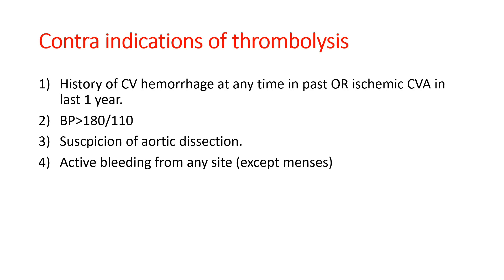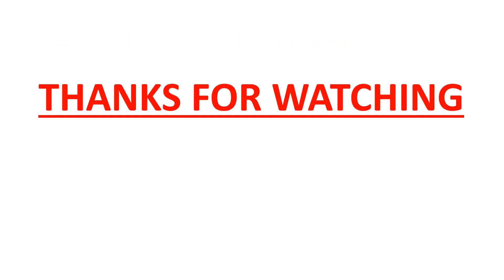Now, the contraindications to thrombolysis in myocardial infarction — conditions in which we cannot perform thrombolysis — include: history of cerebrovascular hemorrhage at any time in the past, ischemic cerebrovascular accident in the last one year, blood pressure more than 180/110, suspected aortic dissection, or active bleeding from any site of the body except menses.